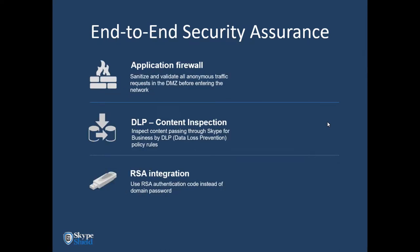The application firewall addresses threats related to anonymous traffic entering the network. This happens when you invite an anonymous guest to join a meeting — someone not federated with you and not a user in your company. From a security perspective, traffic flows into your network without being authenticated or inspected. Our unique application firewall addresses this by sanitizing the traffic, validating the data — for example, that the meeting ID is valid in terms of structure and value — and finally rewrites requests, ensuring only legitimate traffic is allowed into the network.